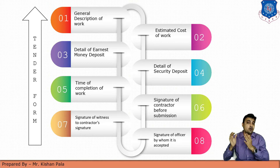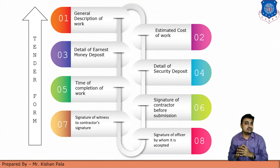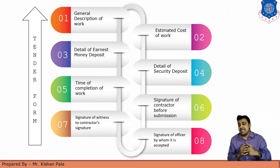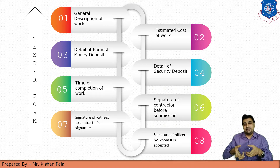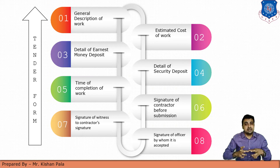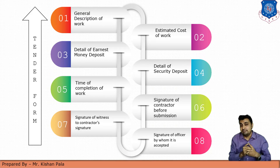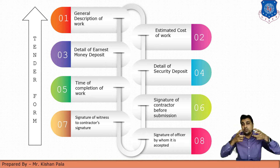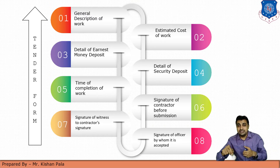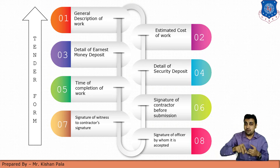Next is the signature of a witness to the contractor's signature — this is one type of security for the client. And the last one is the signature of the officer by whom the tender is accepted. Sometimes the superintendent engineer accepts this type of form, and sometimes another authorized person accepts it. The signature of the person who accepts the tender form should be mentioned. So this is all about the tender form.